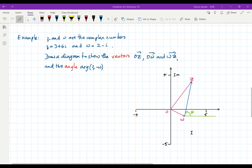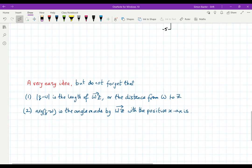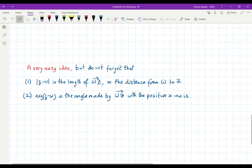This is a very easy idea and one that you should never forget. The modulus of Z minus W is the length of the vector WZ, or sometimes you will find it's easier to think like this, the distance from W to Z.